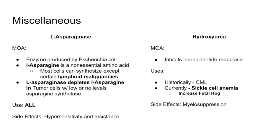Hydroxyurea inhibits ribonucleotide reductase. It was historically used for CML, but now imatinib targets the Philadelphia chromosome 9;22 translocation for CML. Hydroxyurea is still used almost exclusively for sickle cell anemia because it can increase fetal hemoglobin and help treat those patients. It can cause myelosuppression.